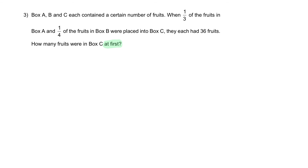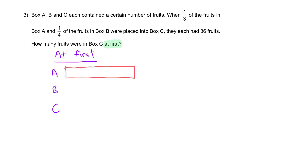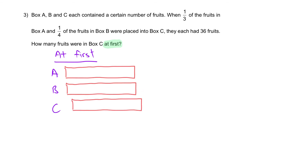Starting from the last information and drawing all the way back to find the model at first. At the end, box A, box B, and box C each had 36 fruits — equal numbers. So box A is 36, box B is 36, and box C is 36.